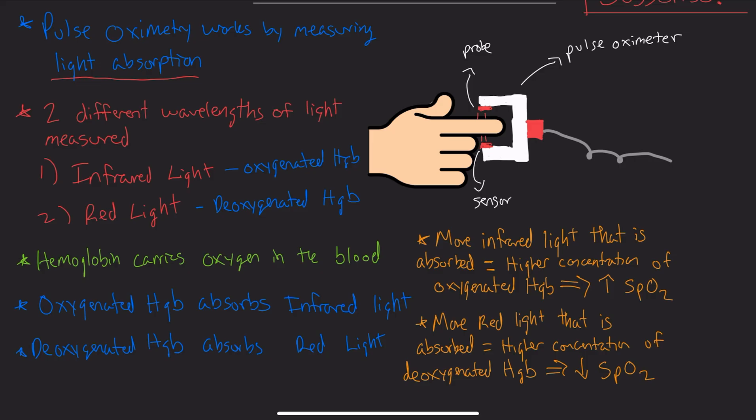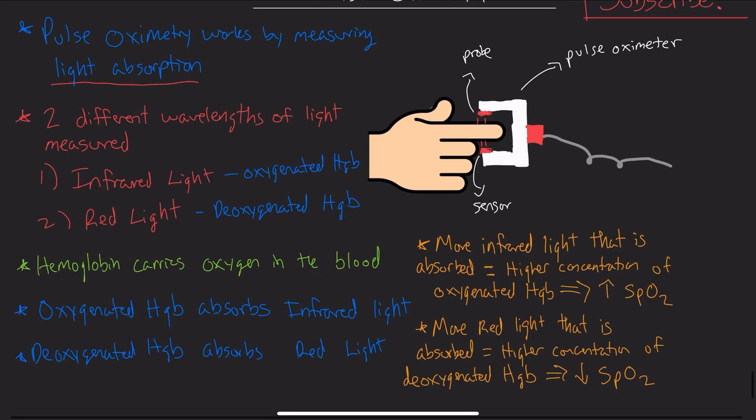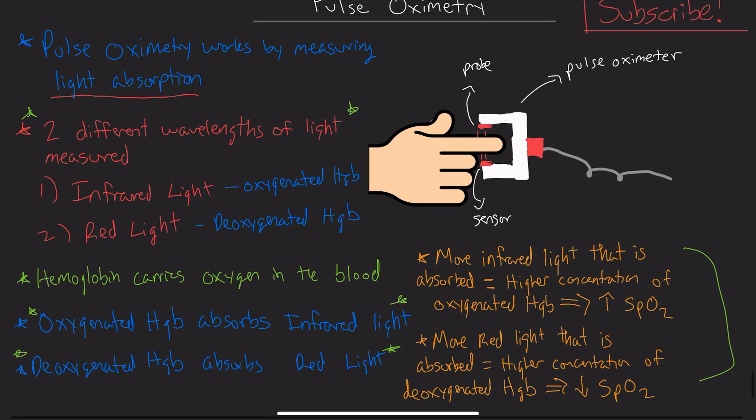That is a basic overview of how the pulse oximeter works and how you get your SpO2 values. Major concepts to know are the two different wavelengths of light that are measured, and remembering that oxygenated hemoglobin absorbs infrared light and deoxygenated hemoglobin absorbs red light. By knowing that, you can work through this and understand the concept better. Hopefully you liked the video. If you learned anything, please like and subscribe, and I will see you all in the next video. Thank you.